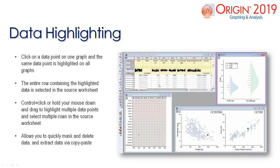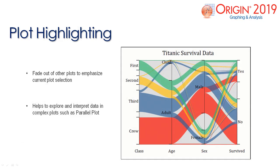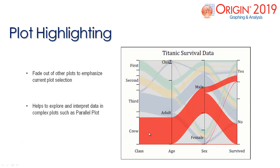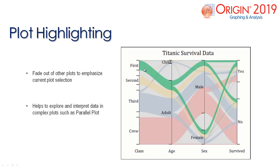In Origin 2019, plot highlighting can be used to fade out other plots on the graph in order to emphasize the current plot selection. This can help explore and interpret the data in more complex plots such as a parallel plot.